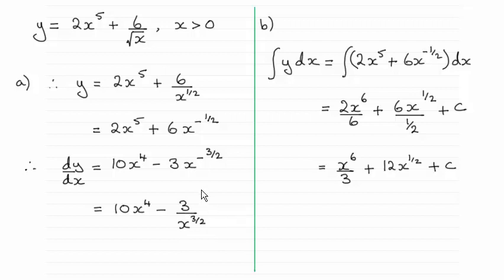If you multiply it by the 3, you end up with 3 over x to the power 3 over 2.